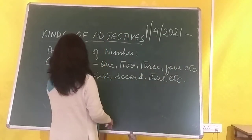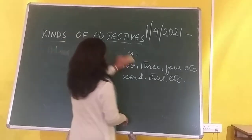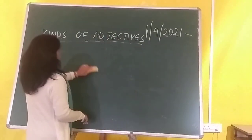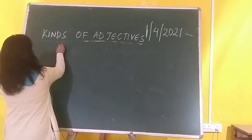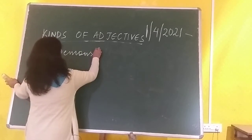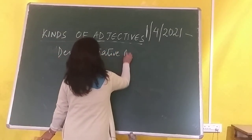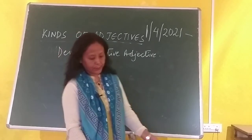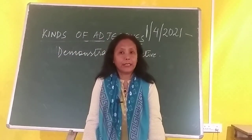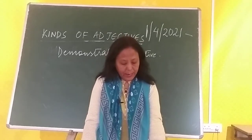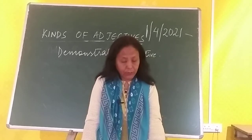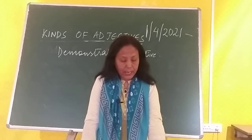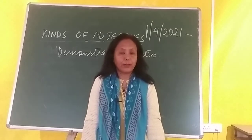The next one is demonstrative adjectives — like we did demonstrative pronouns. This, that, these, those are demonstrative adjectives. For example: 'This mango is ripe and sweet.' So 'this' — this particular mango is ripe and sweet.